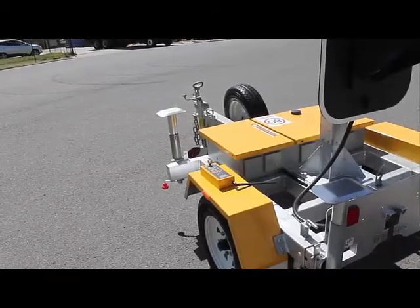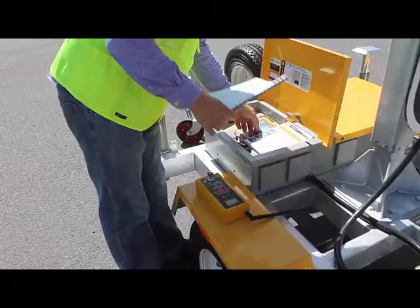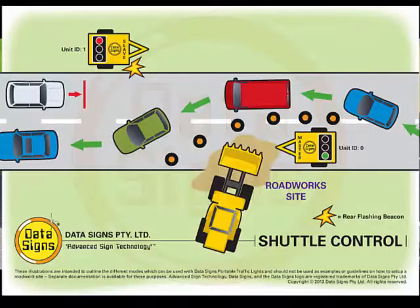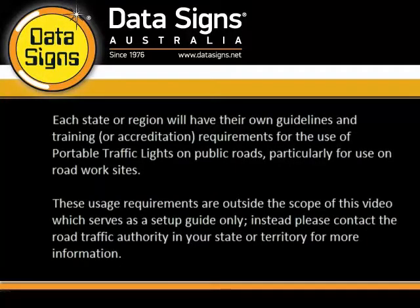In this scenario, the Data Sign Portable Traffic Lights will be set up to illustrate shuffle control operation. Each state or region will have their own guidelines and training or accreditation requirements for the use of portable traffic lights on public roads, particularly for use on road work sites. These usage requirements are outside the scope of this video, which serves as a setup guide only.